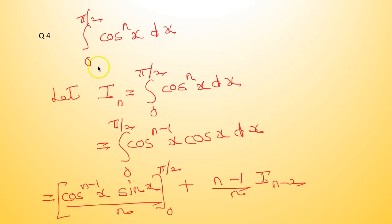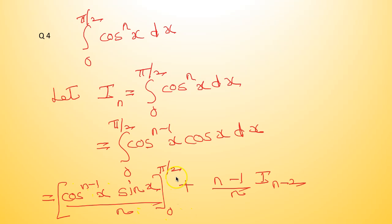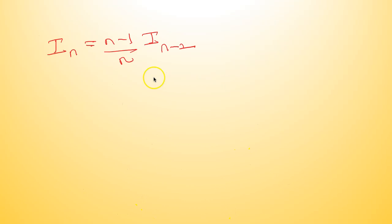For the corollary: evaluate integral from 0 to π/2 of cos raised to nx dx. Let I_n = integral from 0 to π/2 of cos^nx dx. Applying the earlier formula: [cos^(n−1)x·sin x / n] from 0 to π/2 plus (n−1)/n · I_{n−2}. Since cos(π/2) = 0 and sin(0) = 0, we get I_n = (n−1)/n · I_{n−2}.